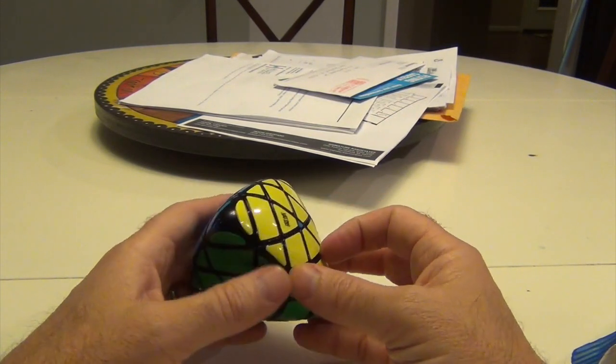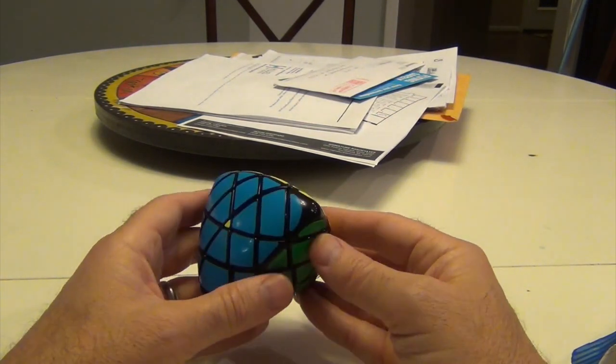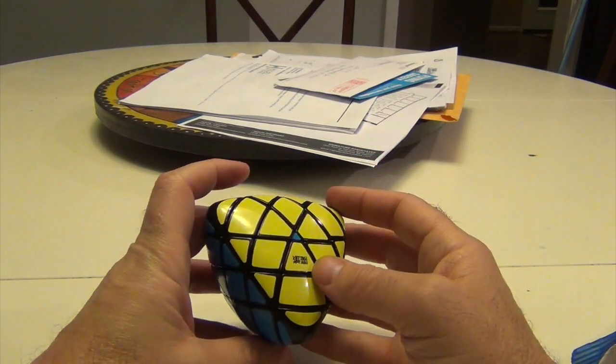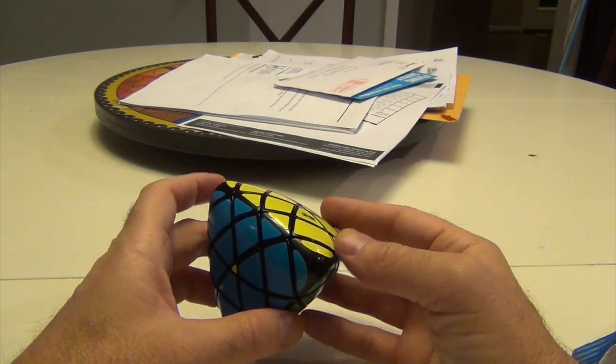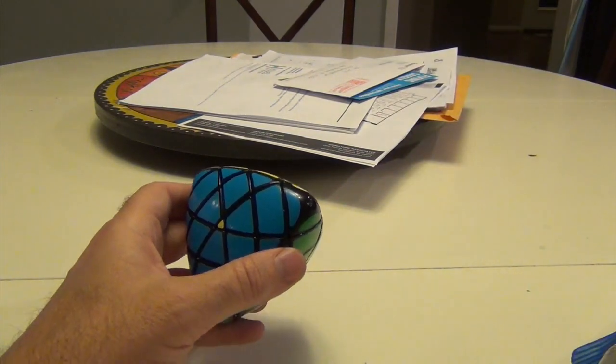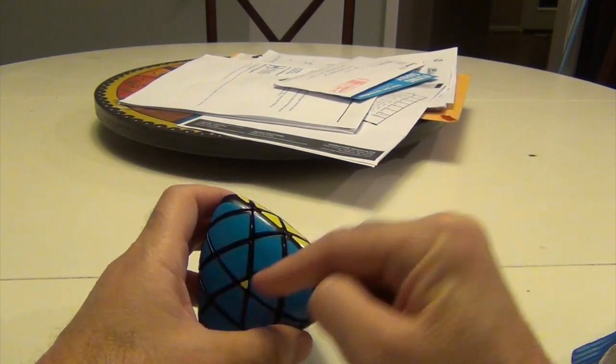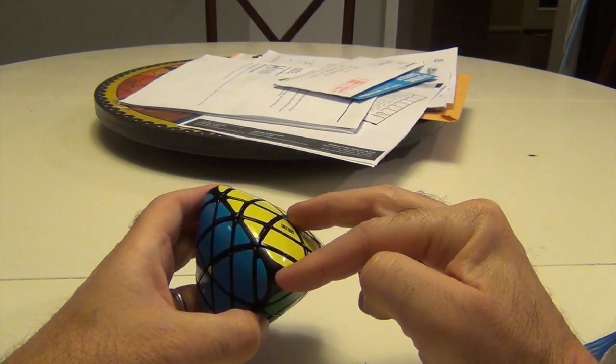I can just hold it like this, and just start wheeling these around until we get them back. So you can use any technique of your choice. So I'm going to do the algorithm that keeps this where it is and rotates these around until I have two that are next to each other. So either this one and this one, or this one and this one.